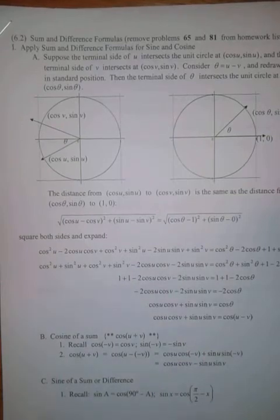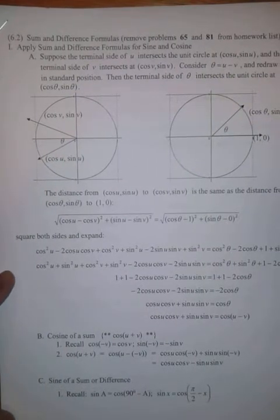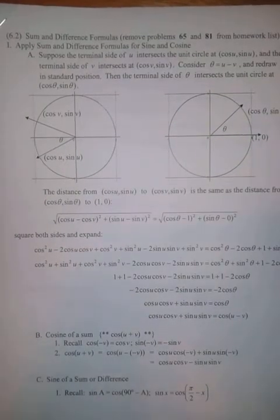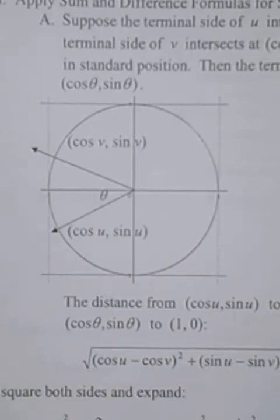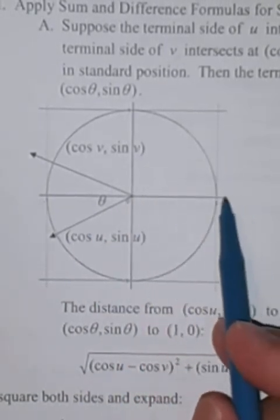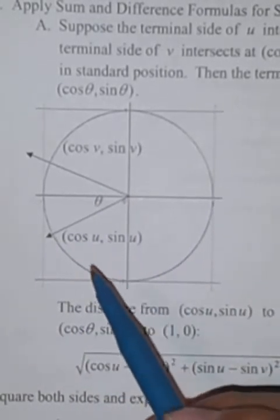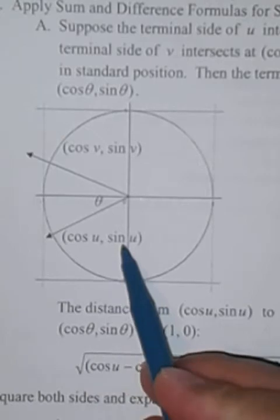Let's look at the sum and difference formulas for sine and cosine. We'll start with the cosine of u minus v. We consider some angle u in standard position — it starts on the positive x-axis and you rotate to some point on the unit circle, so the terminal ray intersects the unit circle at the point (cosine u, sine u).